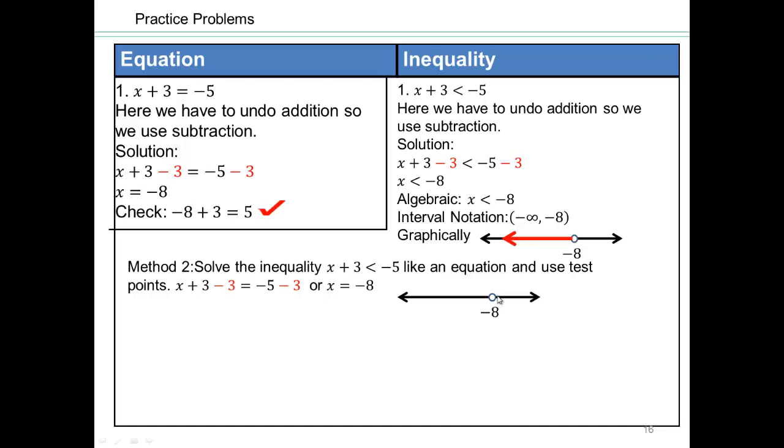All right. Well, if that's the case, then I'm going to try a number below negative 8. This is called a test point. Let's say negative 10. Plug it into the original inequality and see what happens. Negative 10 plus 3 is smaller than negative 5. Negative 7 is smaller than negative 5. That's a true statement.